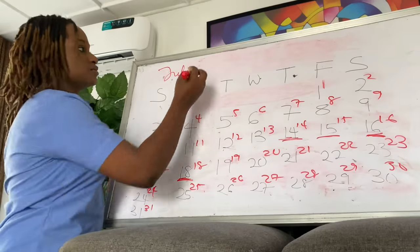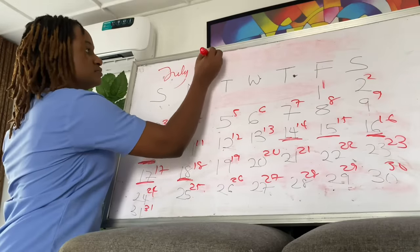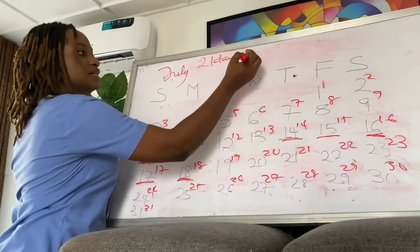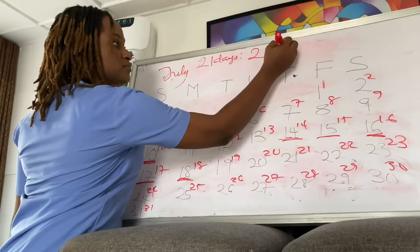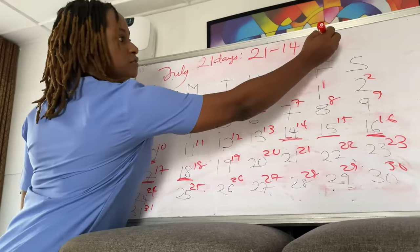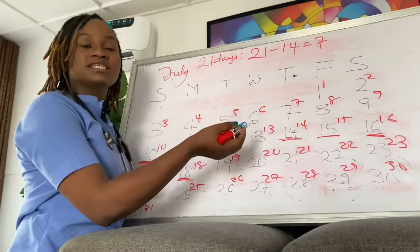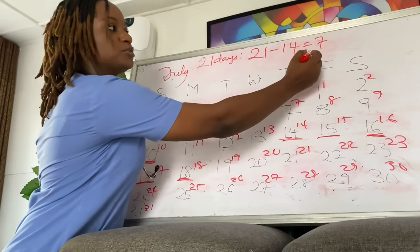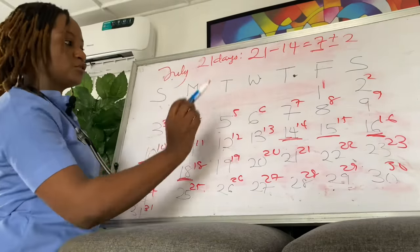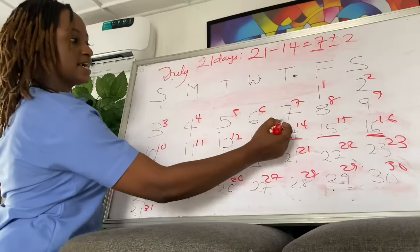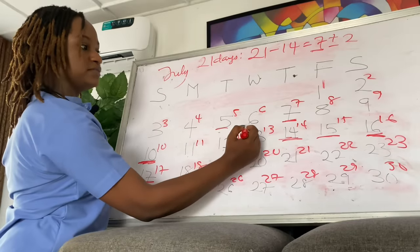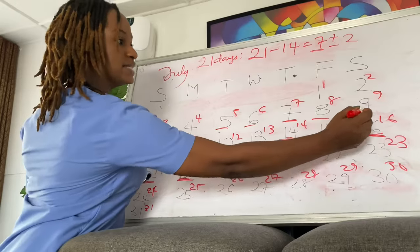For a 21-day cycle: 21 minus 14 equals 7. So a woman with a 21-day cycle should ovulate on Day 7, plus or minus 2. That means she could ovulate on Day 5, 6, 7, 8, or 9.